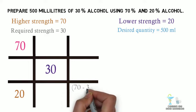Higher percentage 70% minus 30% would give the parts of lower strength required for preparation which is 40%, meaning that we want 40 parts of lower strength.